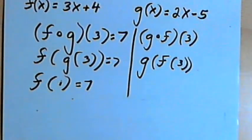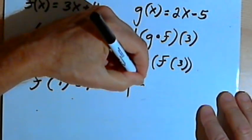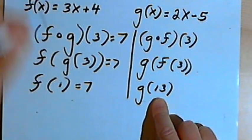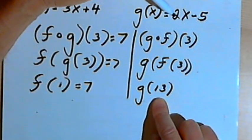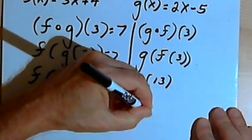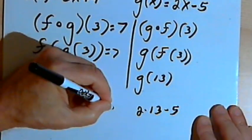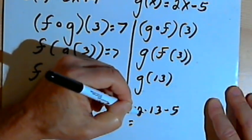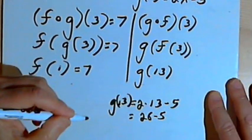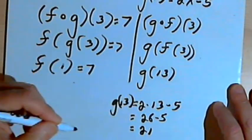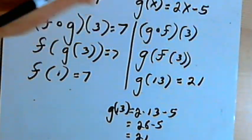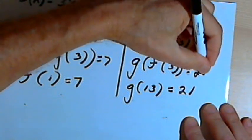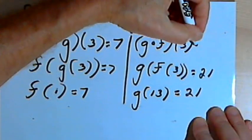That means I can rewrite my composition as g of 13. Now all I have to do is find out what g of 13 is. Well, g of x is 2x minus 5. So g of 13 would be 2 times 13 minus 5. 2 times 13 is 26, so that's 26 minus 5. And 26 minus 5 is 21. So g of 13 is 21, which means that g of f of 3 is 21, and g compose f of 3 is 21.